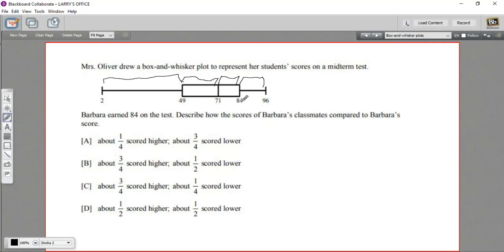Describe how the scores of Barbara's classmates compared to Barbara's score. Well, let's think about that. If Barbara is right here, three out of four quartiles are below that. So that means three fourths of the students scored lower scores than she did. And above it, there's a fourth of the students who did better than she did. So A says about one fourth scored higher, three fourths scored lower. That's what we're looking for here.